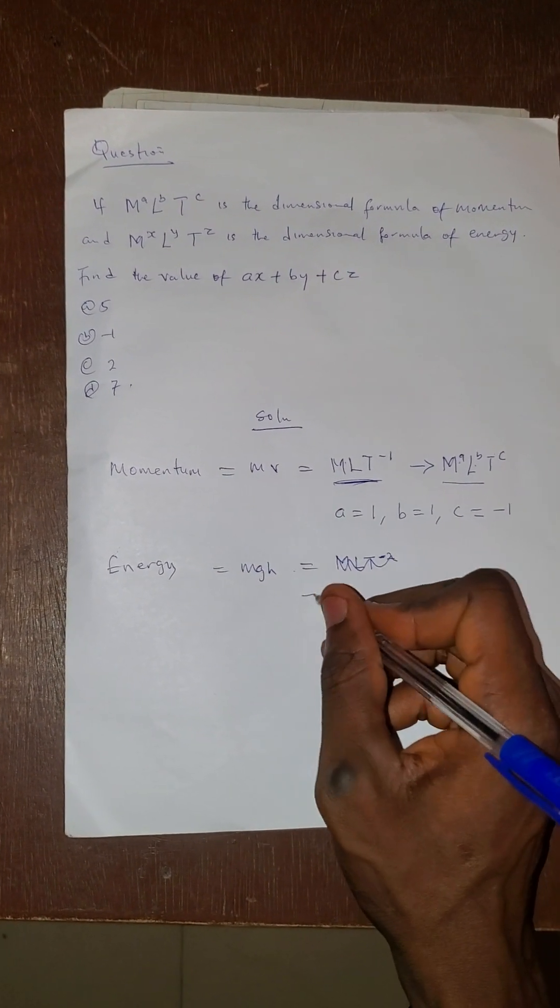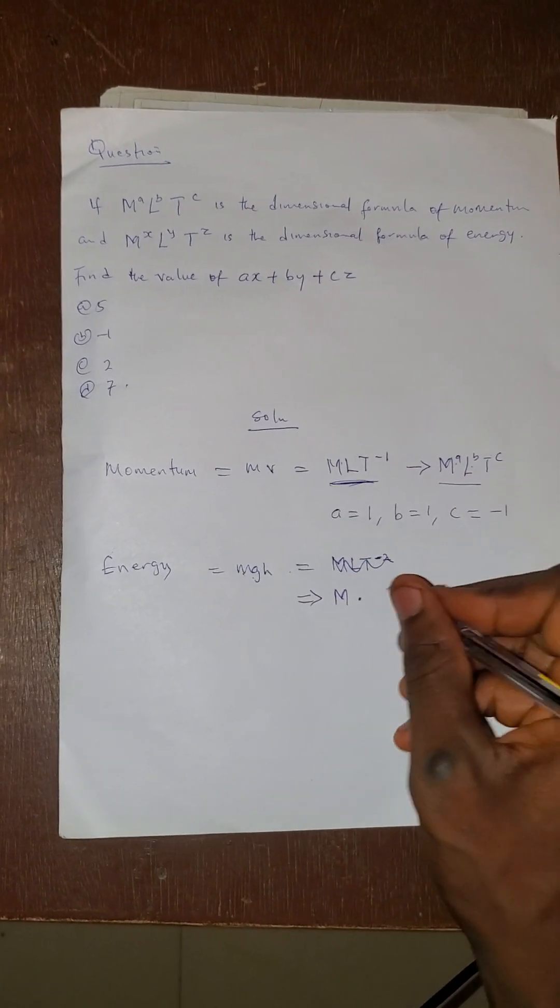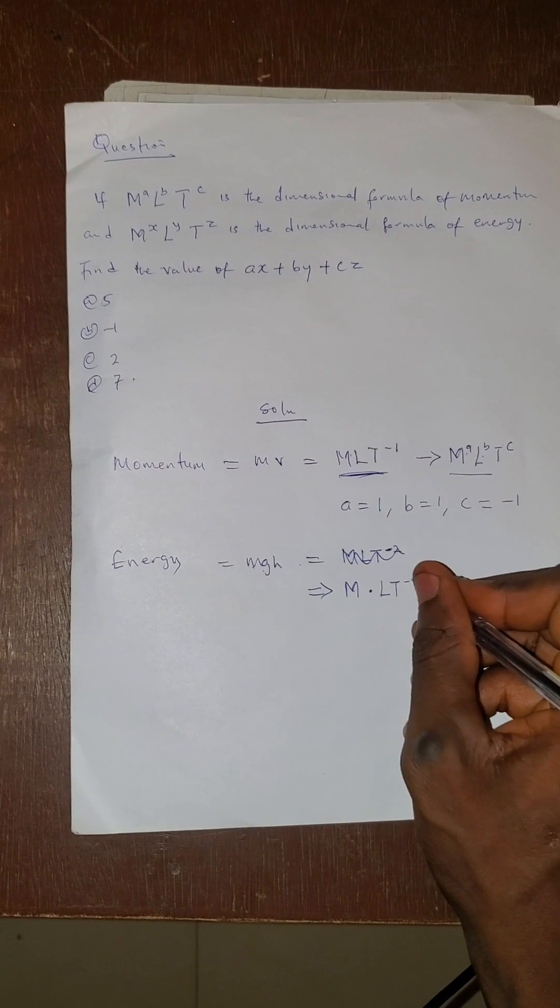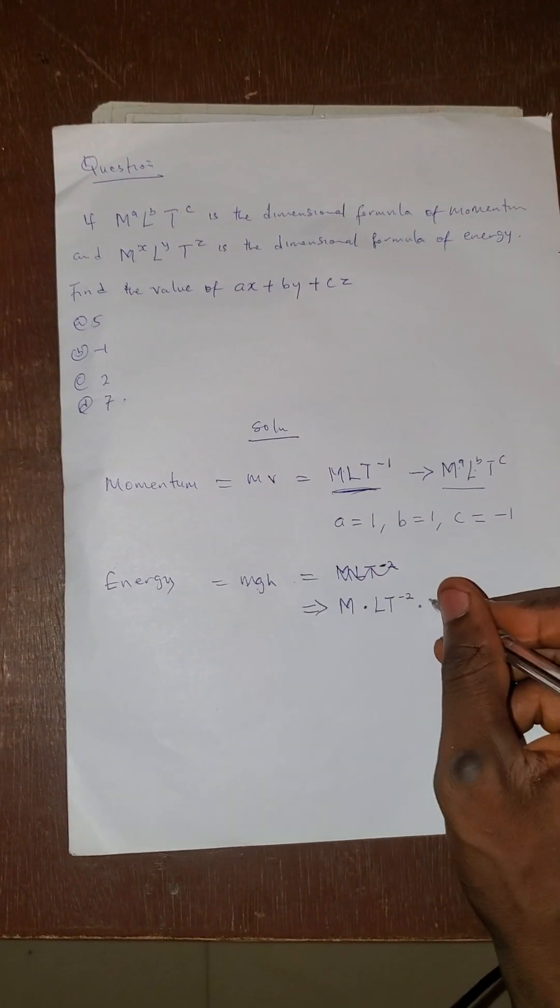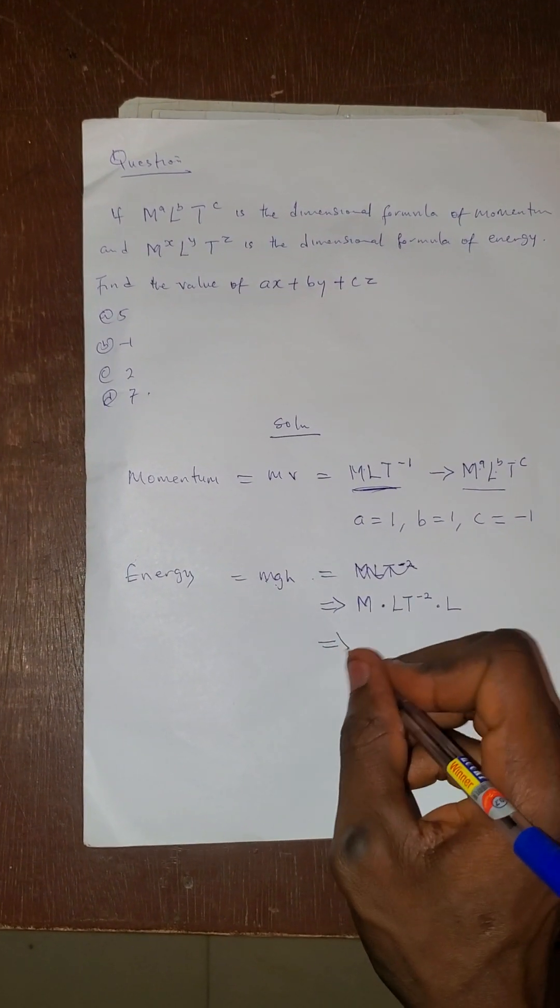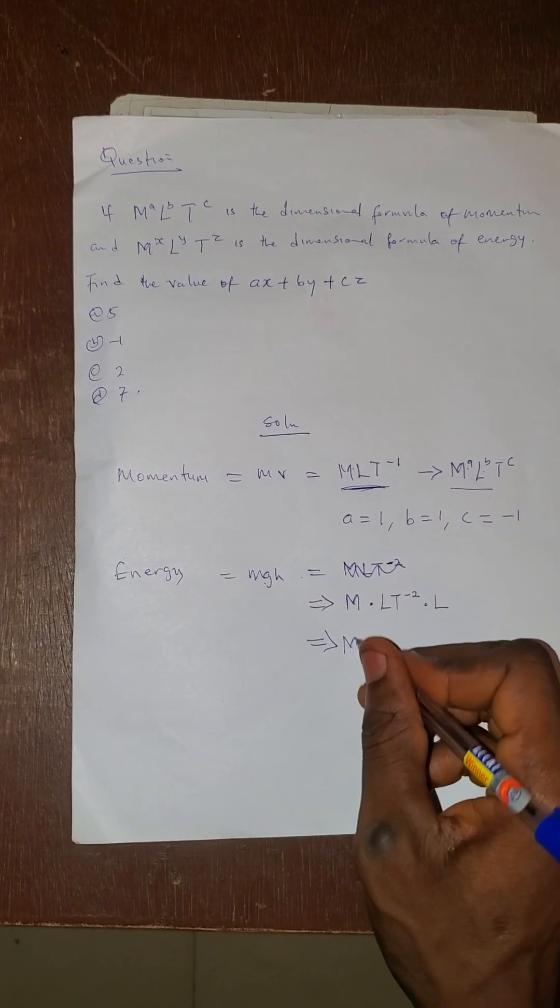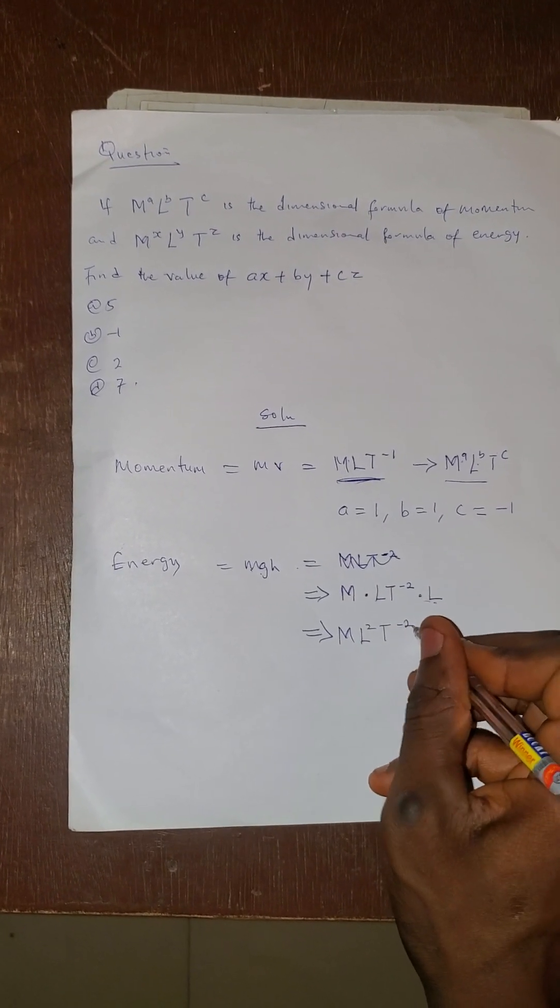Then we now have our h here. Our m here, which is mass, then multiply by acceleration due to gravity. The dimensional formula is LT raised by minus 2, then multiply by h, which is height. The dimension is L. So if we multiply these together, you have it to be M, but L will multiply L here, so that is L squared, then T raised by minus 2.